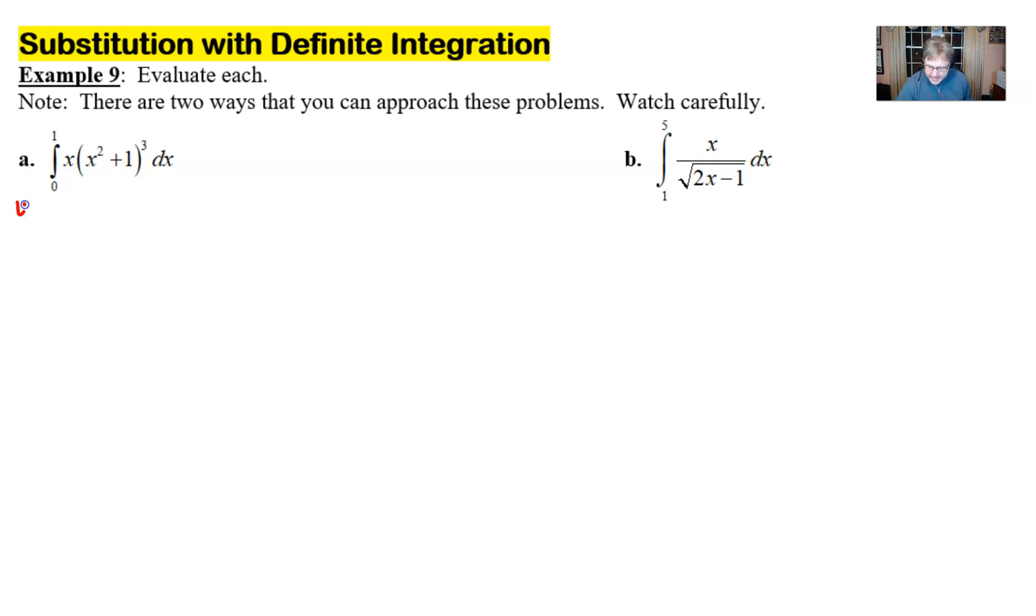So the way that we're going to do these from the outset is going to be no different than what we've done before. We're going to let a u value take a hold and typically that will be a value that's located in parentheses. But moreover the big thing is we want to pick a u such that its derivative will match the other part of the integral. And that's going to happen here pretty close.